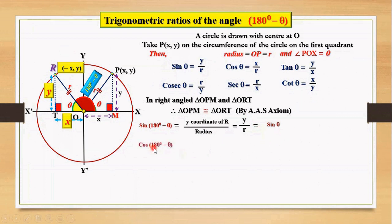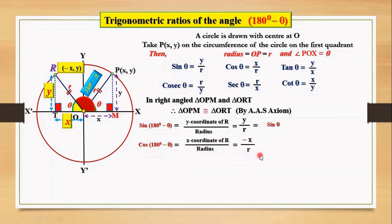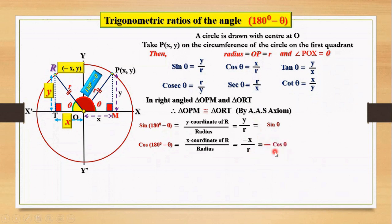Second ratio: cos(180° - θ). Its formula is x-coordinate of R by radius. The x-coordinate of R is minus x and the radius is r. Here we copy minus as it is, and x by r is the ratio of cos theta, so we replace x by r with cos theta. Thus we get cos(180° - θ) = -cos θ.